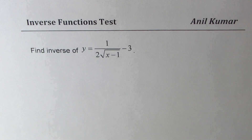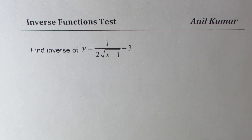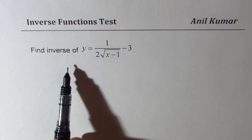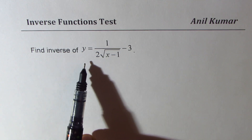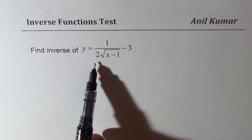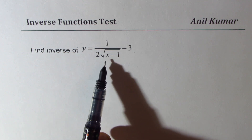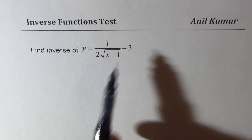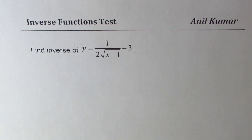I'm Anil Kumar sharing with you an excellent question from my subscriber, and I hope its solution will help many others. We need to find the inverse of y equals 1 over 2 square root of (x minus 1), minus 3.